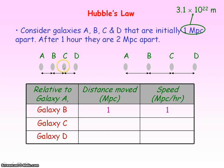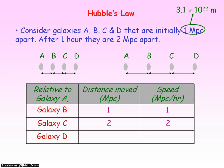Galaxy C, relative to galaxy A, was initially two megaparsecs away, but an hour later is now four megaparsecs away. So it has moved a distance of two megaparsecs in that hour, and so has a speed of two megaparsecs per hour.